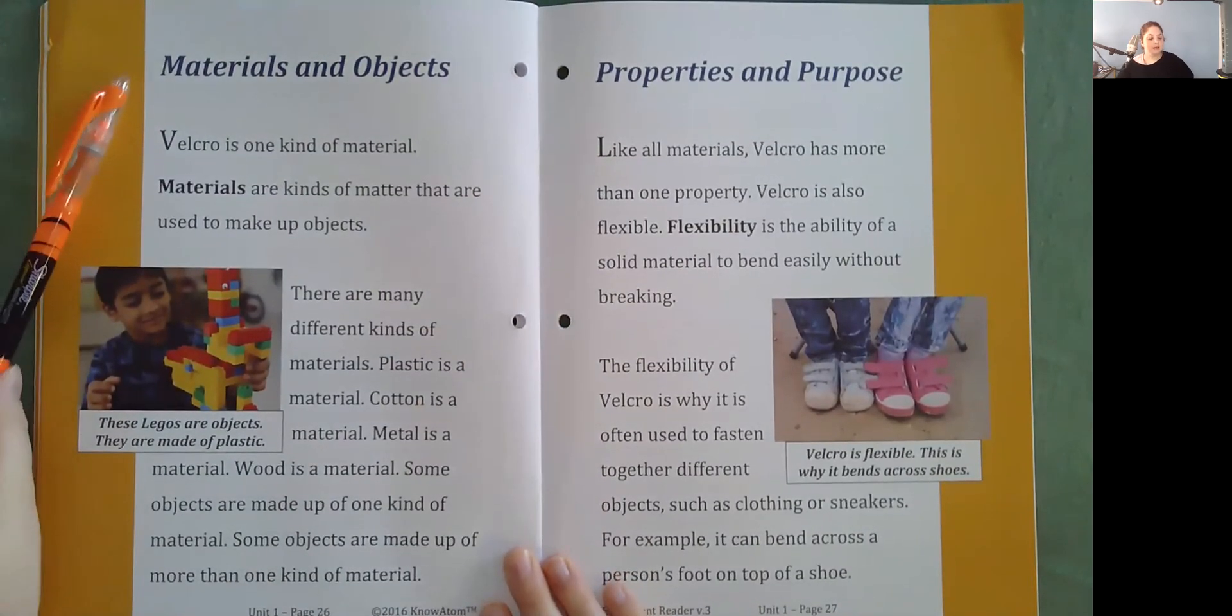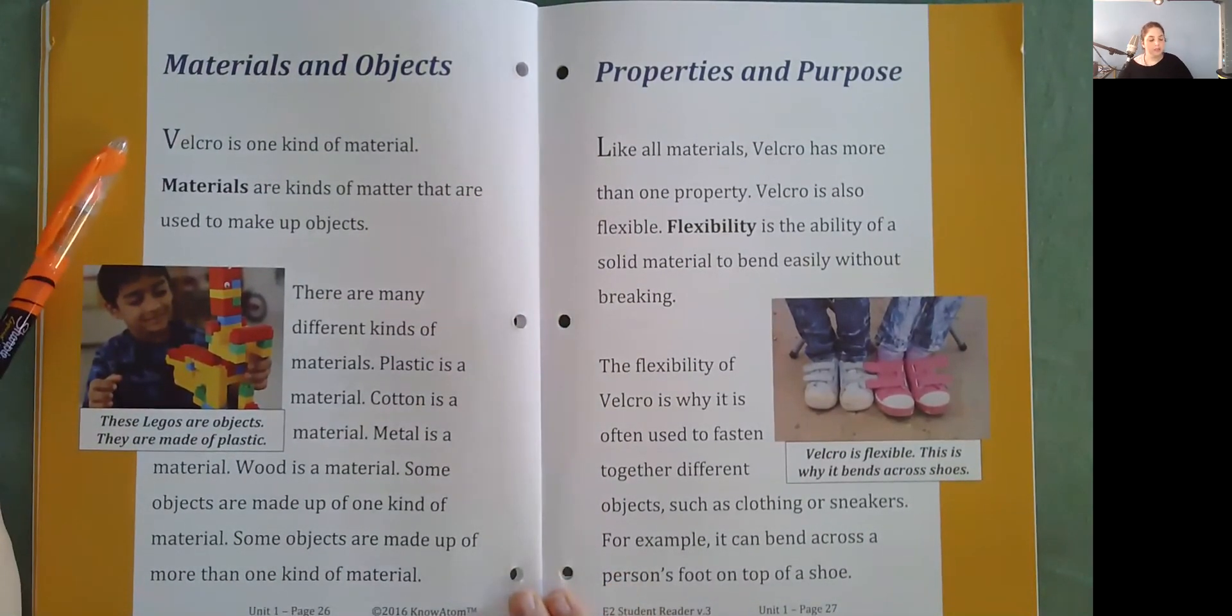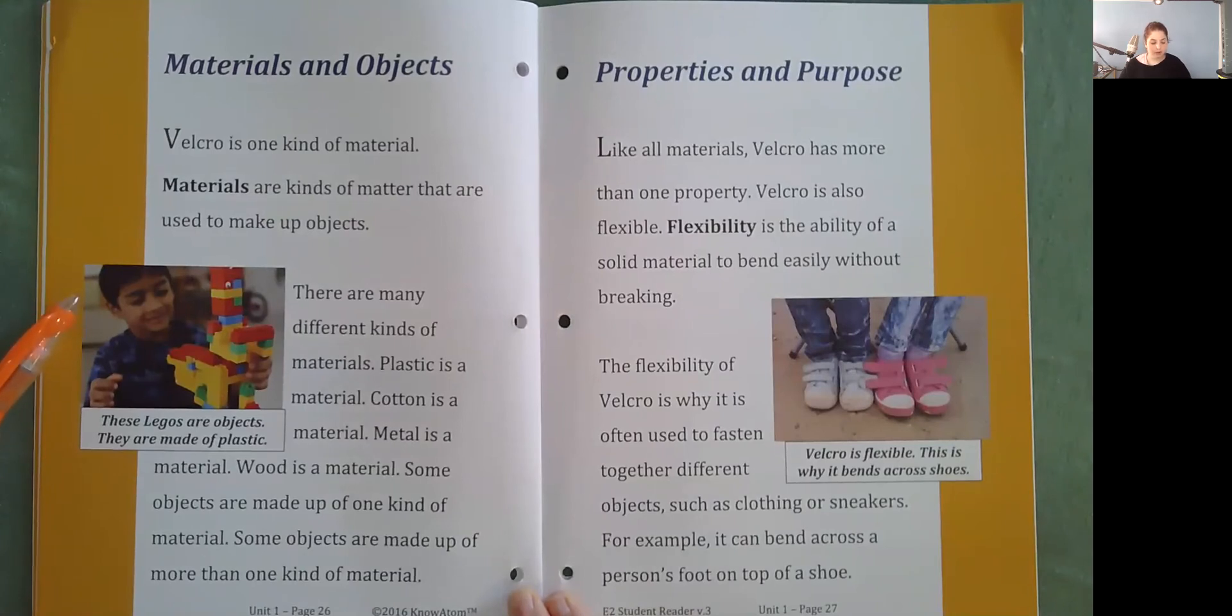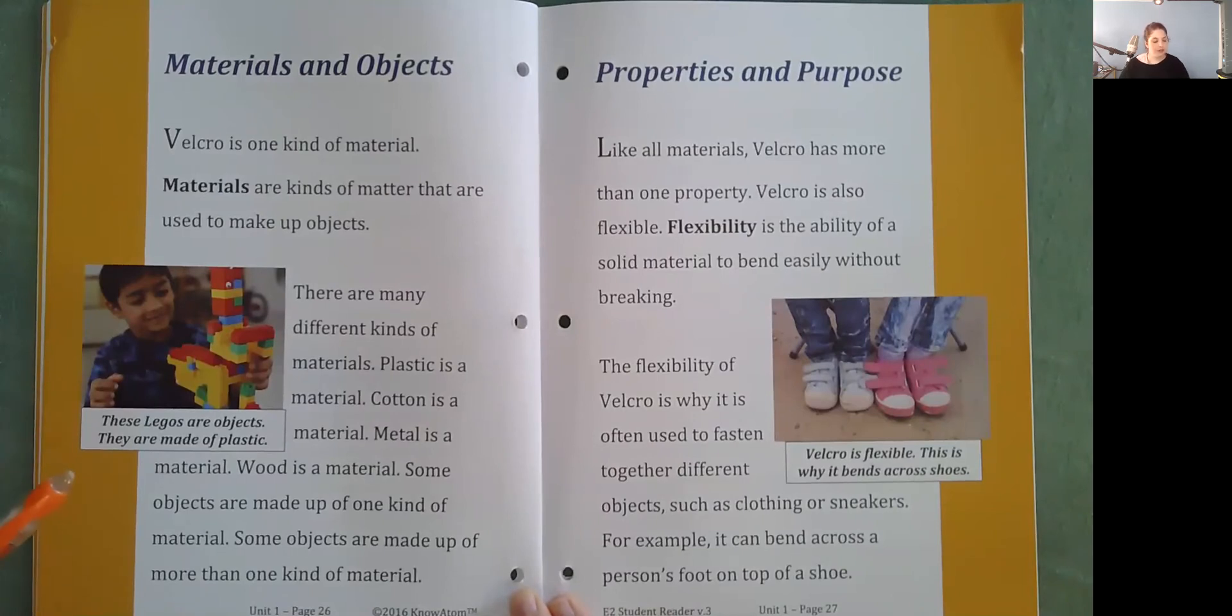Materials and objects. Velcro is one kind of material. Materials are kinds of matter that are used to make up objects. There are many different kinds of materials. Plastic is a material. Cotton is a material. Metal is a material. Wood is a material. Some objects are made up of one kind of material. Some objects are made up of more than one kind of material. So these Legos are plastic.